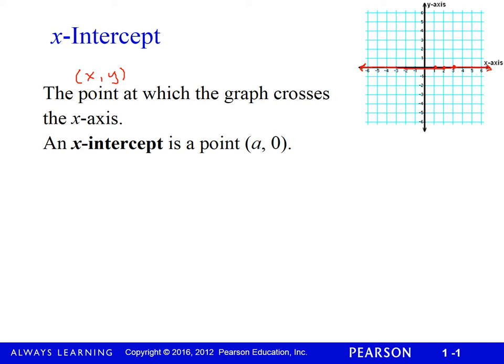An x-intercept is a point (a, 0). To find a, we let y equal 0. When you're on the x-axis, y equals 0. The x-axis equation is y = 0, and the y-axis is the line x = 0. This is sometimes surprising for students. To find the x-intercept, set y = 0 and solve for x.